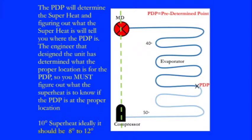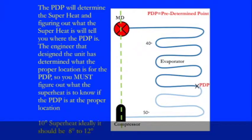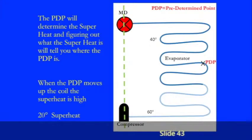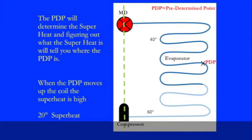Now, if we look at slide 43, we see the pre-determined point has moved up the coil. It's superheating after the pre-determined point, but because of that, it's superheating in a much larger area. Because of that, the outlet temperature is now 60 degrees.